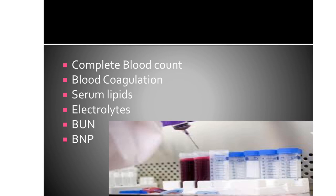White blood cell count increases during infectious and inflammatory processes, especially of the heart, and especially after myocardial infarctions — because a large number of white blood cells are needed to dispose of necrotic tissue resulting from the infarction. An elevated hematocrit level can result from vascular volume depletion, while decreased hematocrit and hemoglobin levels are indicative of anemia.